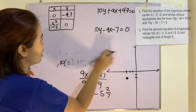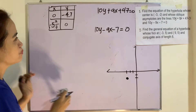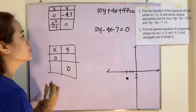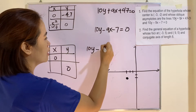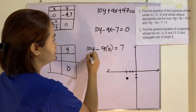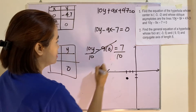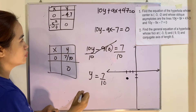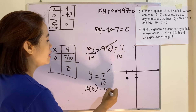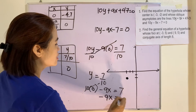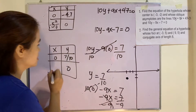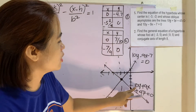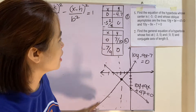For the second equation, let's find the x and y intercepts. Letting x equal 0: 10y minus 9 times 0 equals 7, so y equals 7 over 10. Letting y equal 0: 10 times 0 minus 9x equals 7, so negative 9x equals 7, giving x equal to negative 7 over 9. I have already plotted these points — this line represents the first equation, and this line represents the second equation.